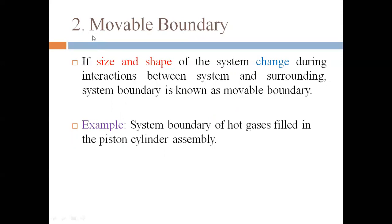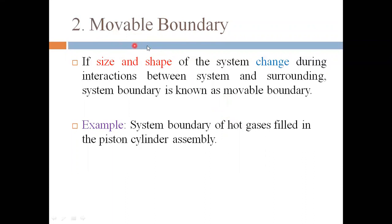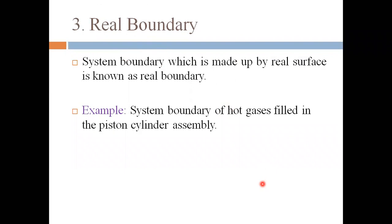What is a movable boundary? If the size and shape of the system change during the interaction between the system and surrounding, that boundary is known as a movable boundary. For example, hot gas filled in a piston-cylinder — when the gas expands or is compressed, the piston moves, and the shape and size of the system changes. That type of boundary is known as a movable boundary.